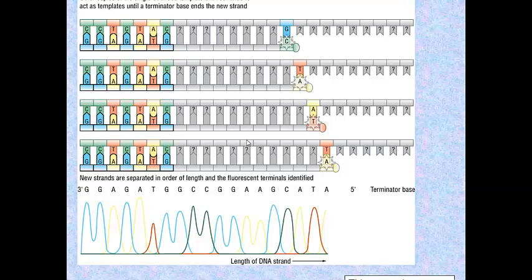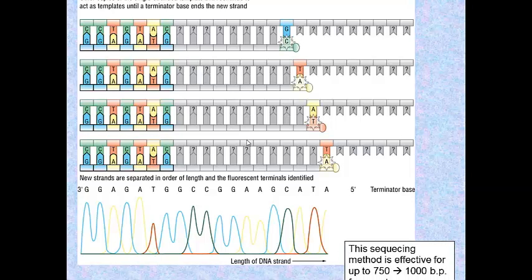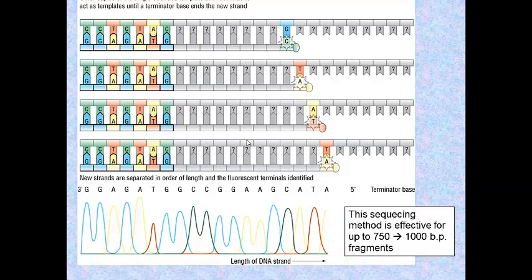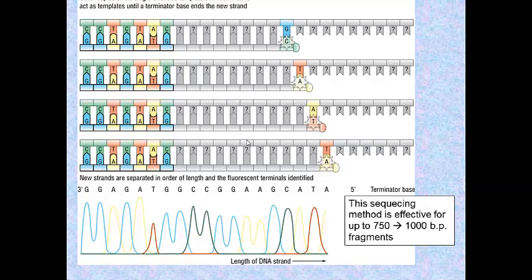This sequencing method is effective for fragments which are up to, well, between 750 and 1000 base pairs. Beyond that, you've got to be a little more clever and you've got to start slulling things together and doing jigsaw puzzles. And that's what we'll think about in the second video.